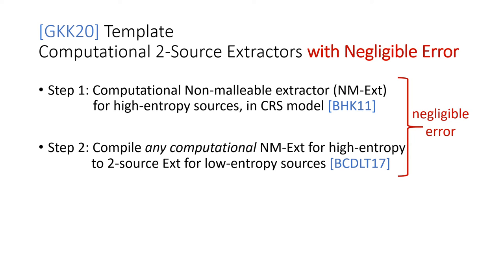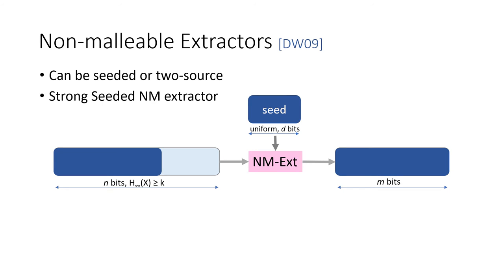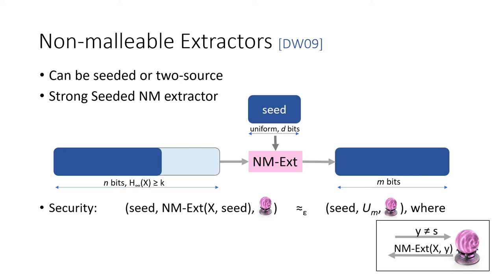We will now define what a non-malleable extractor is. A non-malleable extractor can be seeded — involving an entropic source and a uniform seed — or be two-source, involving two independent entropic sources. For this talk, we consider strong seeded non-malleable extractors. Just like a seeded extractor, a non-malleable extractor on input x sampled from the source distribution and a seed outputs something supposed to be uniformly random. But the security requirement is stronger: the output must be indistinguishable from uniform even given access to an oracle.